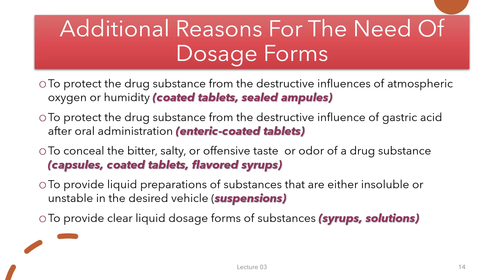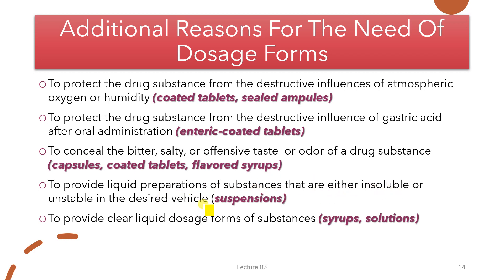There are additional reasons for the need of dosage forms. The first is to protect the drug substance from the destructive influences of atmospheric oxygen or humidity — for this reason, coated tablets and sealed ampoules are prepared. Enteric coated tablets are formulated to protect drug substances from the destructive influence of gastric acids after oral administration. Capsules, coated tablets, and flavored syrups are formulated to conceal the bitter, salty, and offensive taste or odor of drug substances. Suspensions are formulated to provide liquid preparations of substances that are either insoluble or unstable in the desired vehicle.